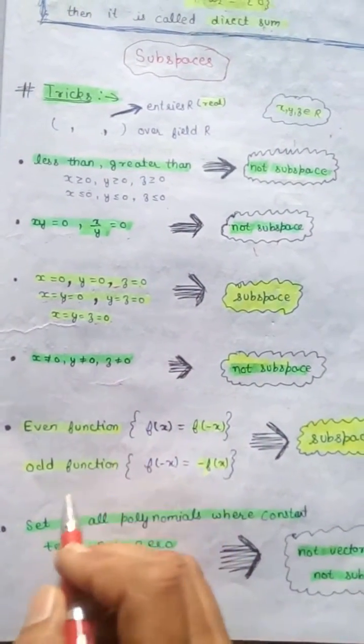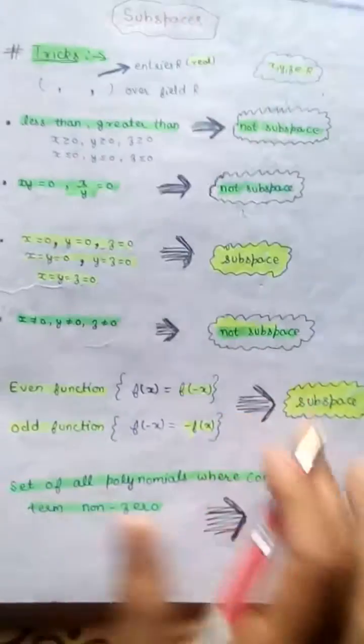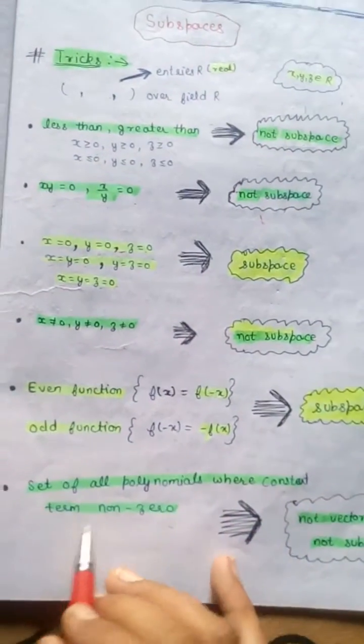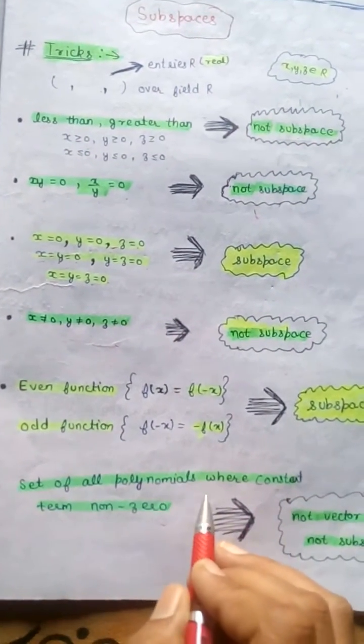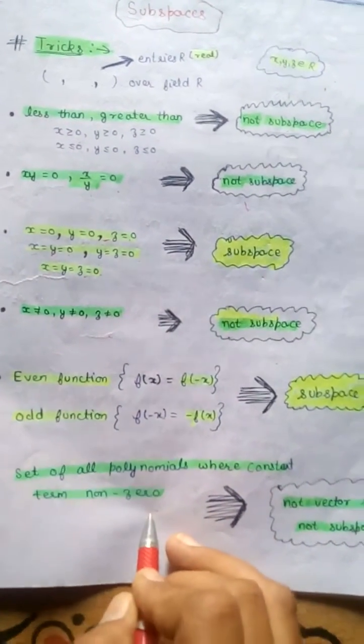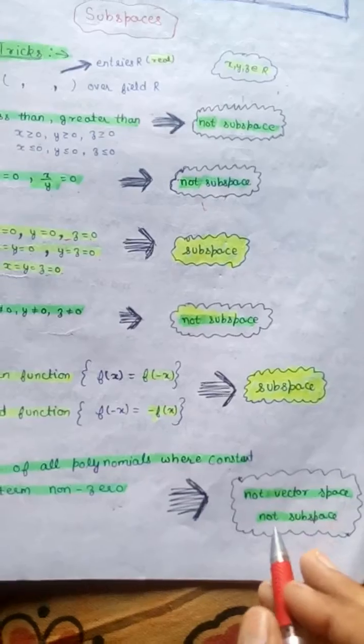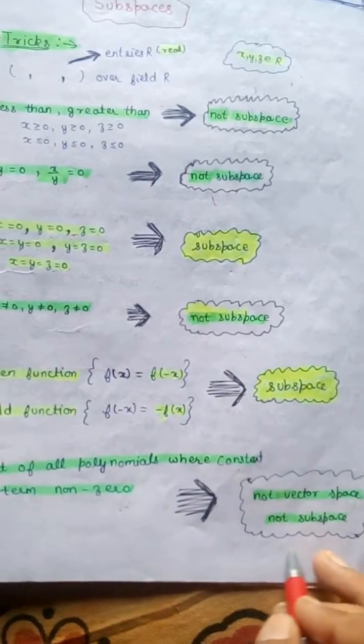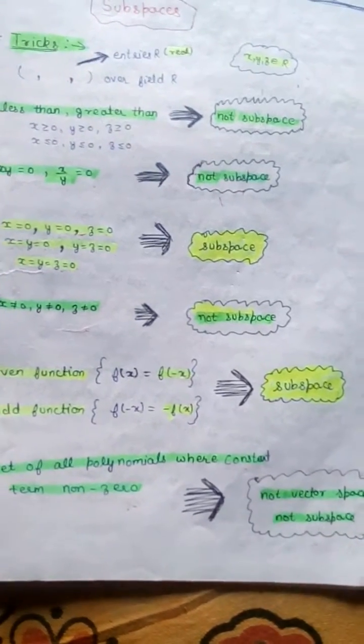Even functions and odd functions are subspaces. The set of all polynomials where the constant term is non-zero is not a vector space or subspace.